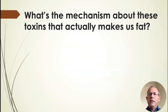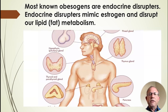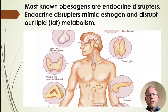The mechanism that actually makes us fat is complicated — it involves many different systems. Some chemicals will affect the thymus gland, some the pancreas, some the thyroid, some the adrenals, and some will affect all of them. It's not simple.